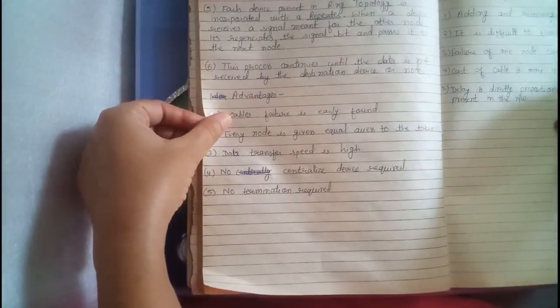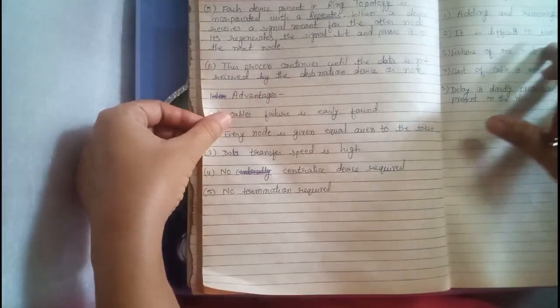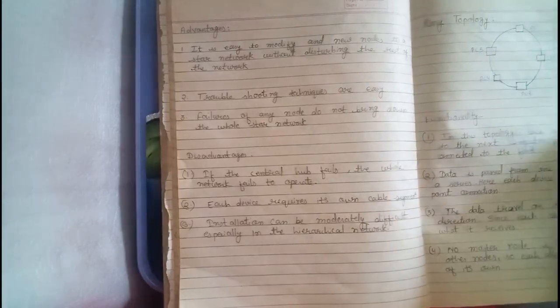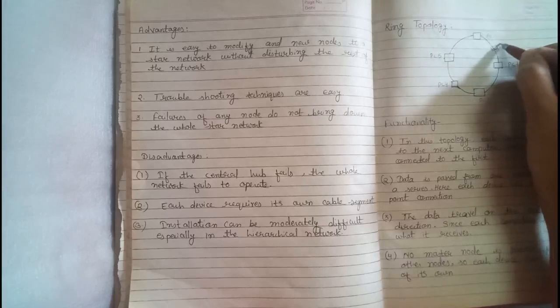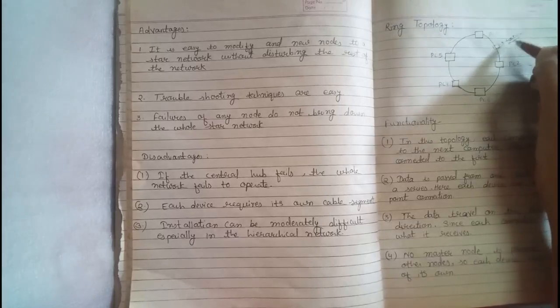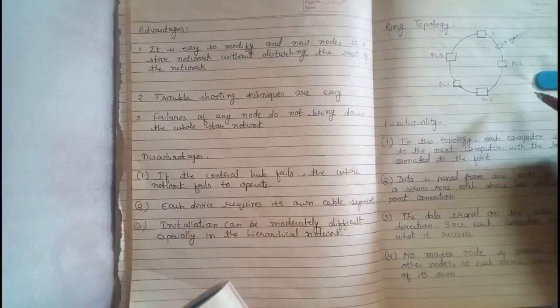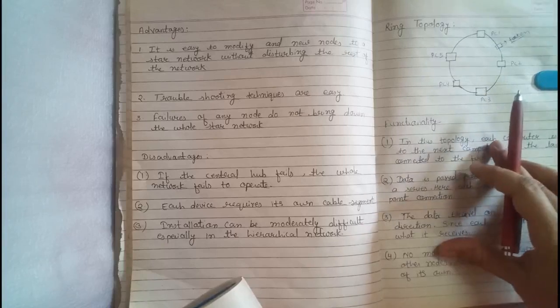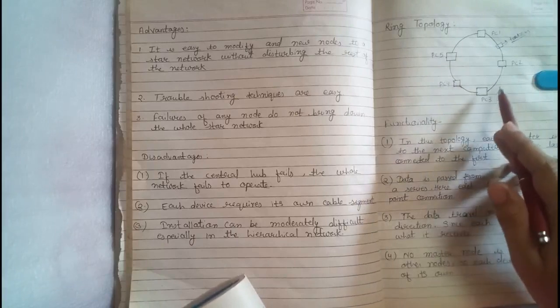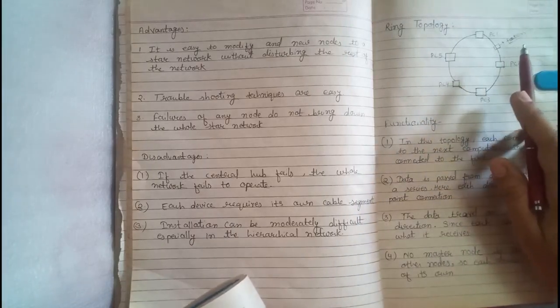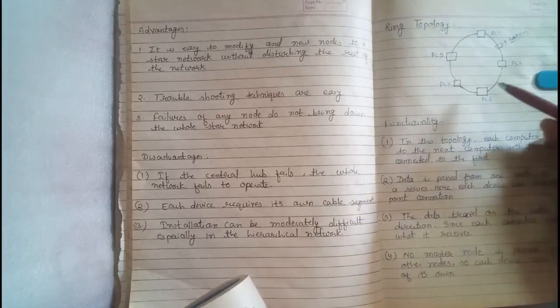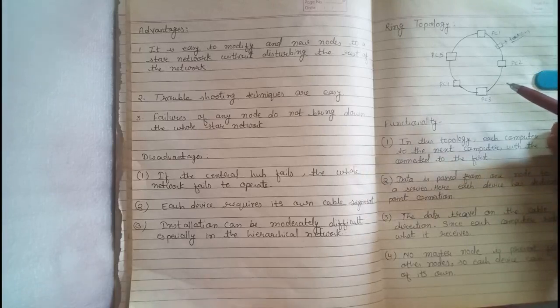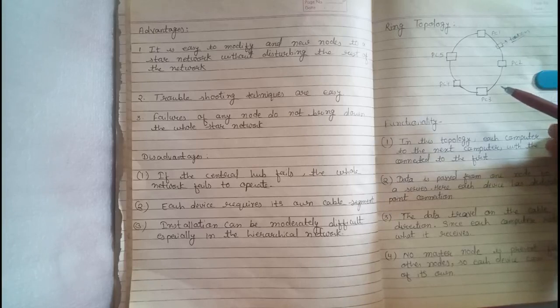This process continues until the data is not received by the destination device or node. In this ring structure, when data travel is happening, there is a token here. There is an empty token. This free token is circulating on the ring. If any host want to send data, it has to first capture token which is circulating in the ring. Then write data and recipient address on the token. The token sent to the next host who reads the address. If address is not own then pass to the next host. This process is continued until the token is received by destination.